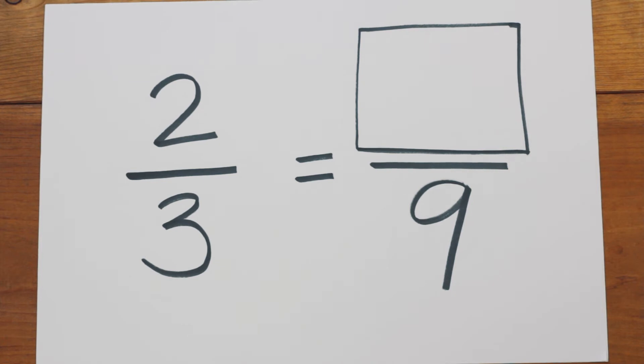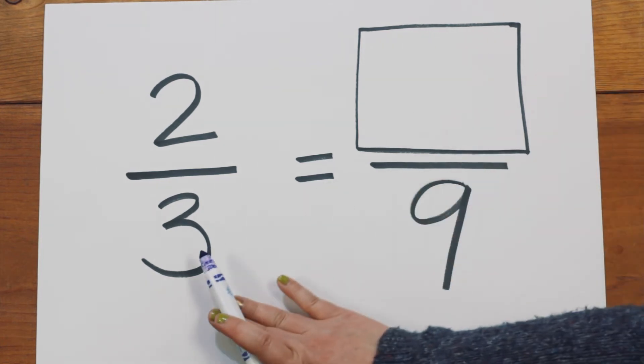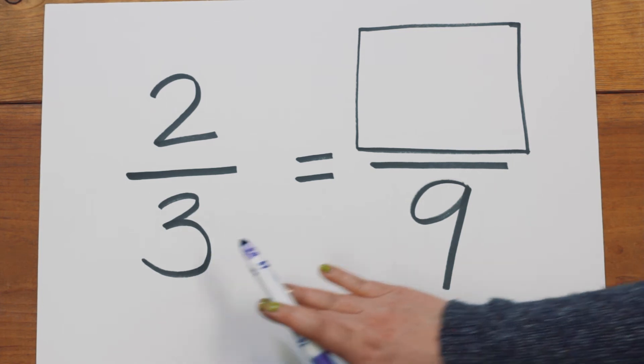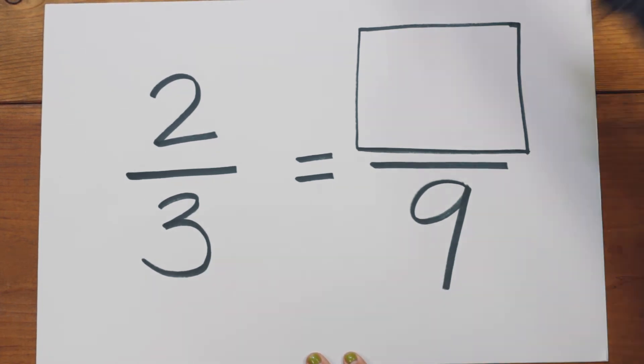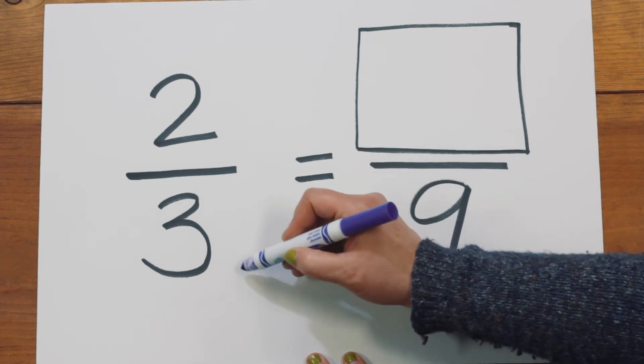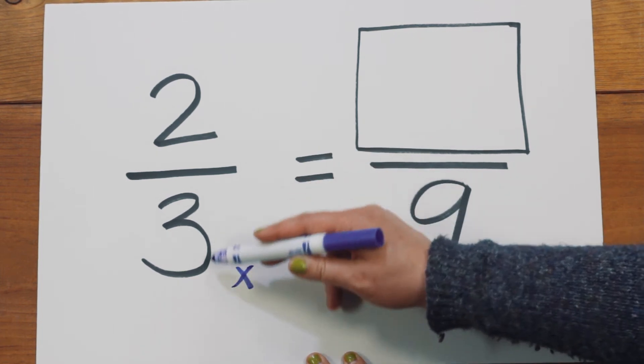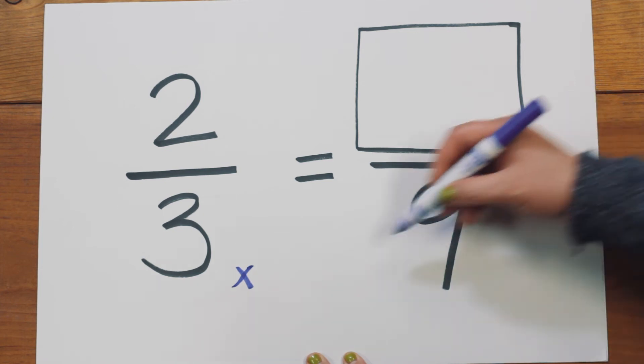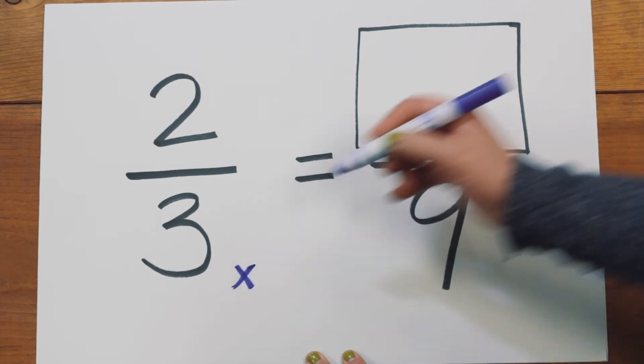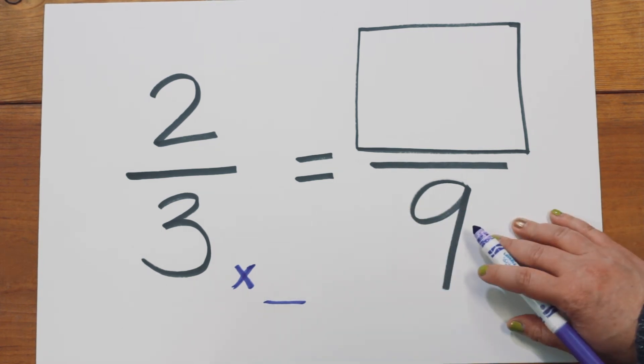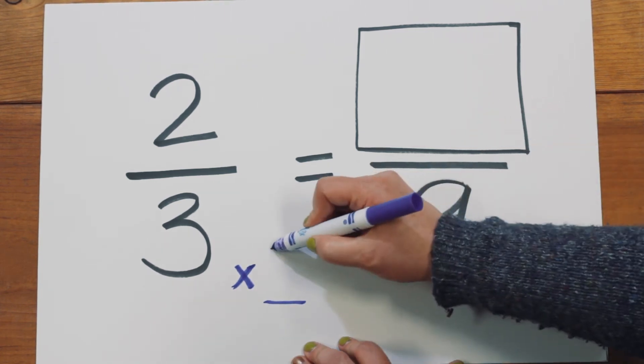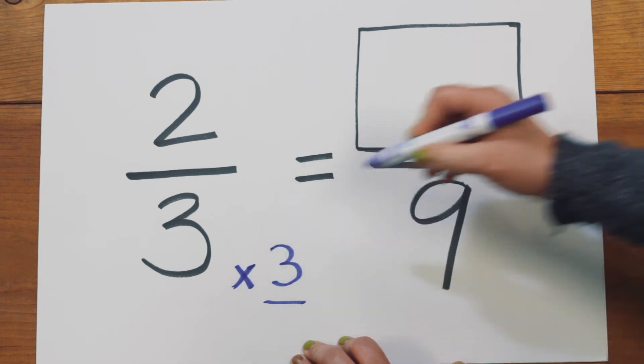Here's how the game goes. Whatever you do to the bottom, you do to the top. So let's take a look at these bottom two numbers and their relationship. Answer me this question. What's going on with number three? In order to get to a nine, how many times would it need to be multiplied? Three times what equals nine? Hopefully you all said three, and this is the game we're playing.